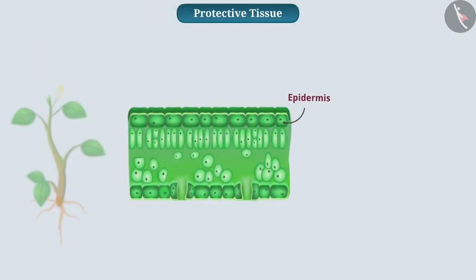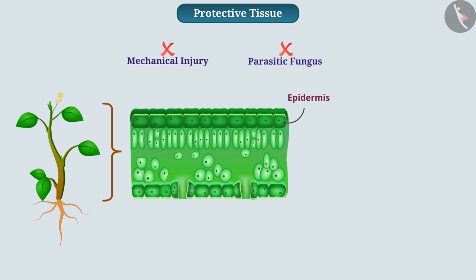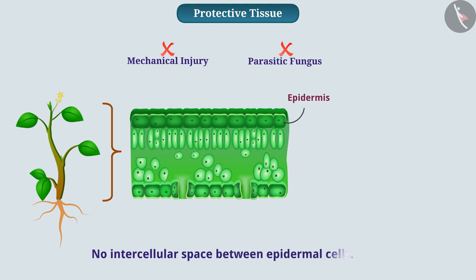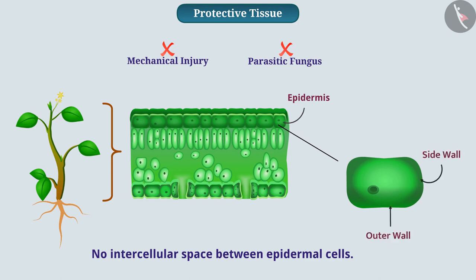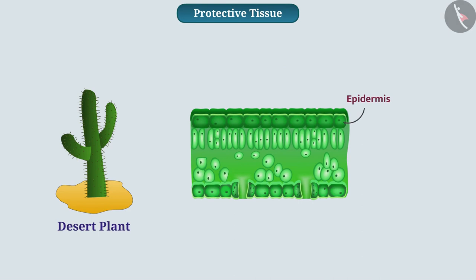Epidermis is the outermost single-cell-thick layer. The entire surface of the plant is covered with epidermis. Epidermal cells form water-resistant wax layers on the outer surface of plants, which protects them from mechanical injury and parasitic fungus. The layer of epidermis is continuous with no intercellular space between epidermal cells. Most epidermal cells are flat and their outer and side walls are thicker than the inner wall. The epidermis of desert plants is thick and contains a coating of cutin, a waterproof chemical compound that protects plants from water loss.